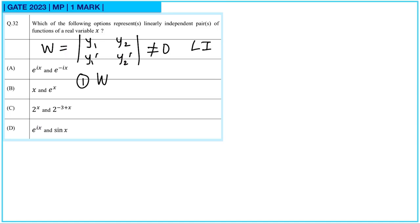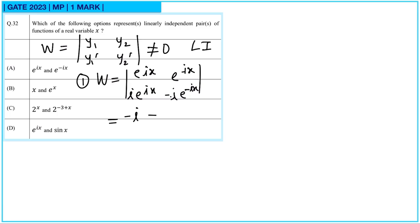For the first pair: e^(ix) and e^(−ix). The derivative gives i·e^(ix) and −i·e^(−ix). The Wronskian is −i − i = −2i, which is not equal to 0. So they are linearly independent.